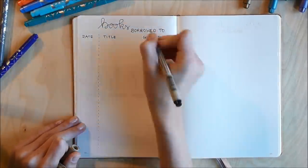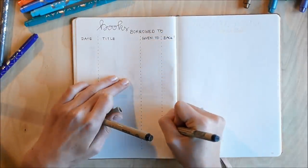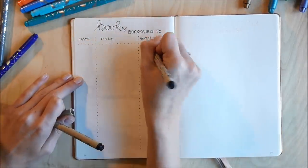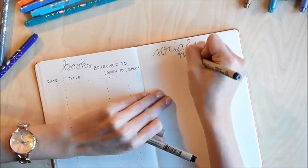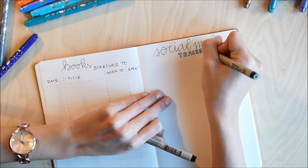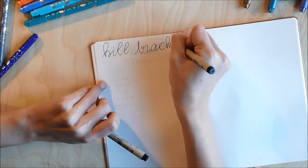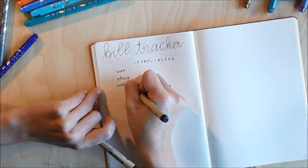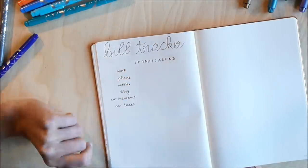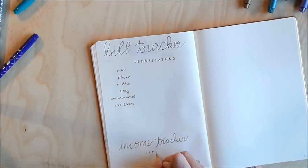So next up I wanted to have a place where I write down books that I borrowed to someone else because I tend to forget about that and then I'm standing in front of my bookshelf and get panicked because I can't find certain books. On the right side I decided to add a social media tracker but I'm not sure how I want to track Instagram and YouTube. If you have ideas hit me up with them. I'm still unsure.